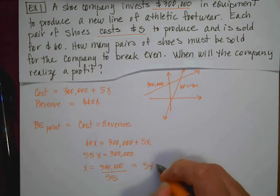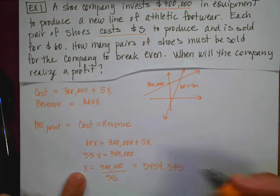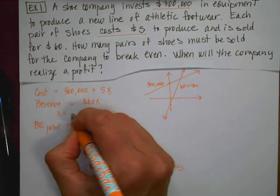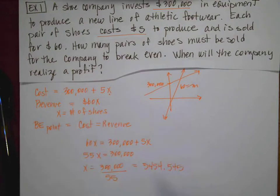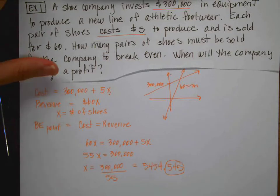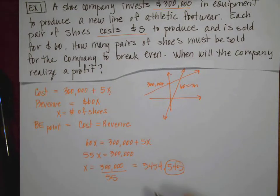x is going to equal the $300,000 divided by 55. And that's going to give me 5454.545. Now if x represents the number of shoes that I'm going to make, it's really weird to make 0.545 of a shoe. So I'm going to round up and say that x is equal to 5455 shoes for the break even point.